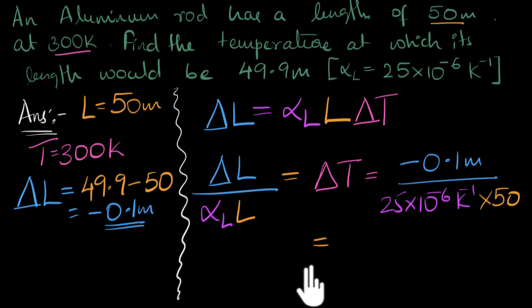All right, so let's just quickly solve this. What do we get? By the way, this is 50 meters. So the meters and meters cancel. We can take the 10 to the minus 6 upstairs, that will become 10 to the plus 6. 10 to the plus 6 times 0.1, that will be 10 to the power 5. So we can write that as 10 to the power 5. So 1 and 5 zeros, divided by 25 times 50.